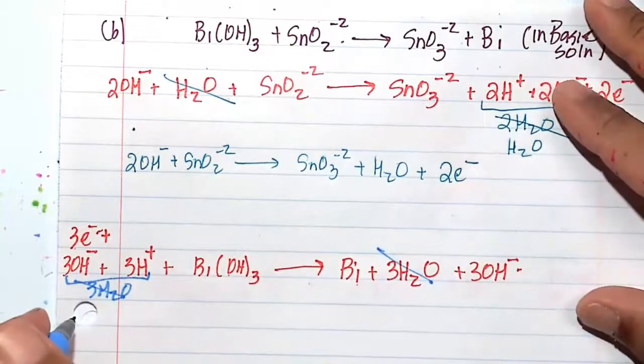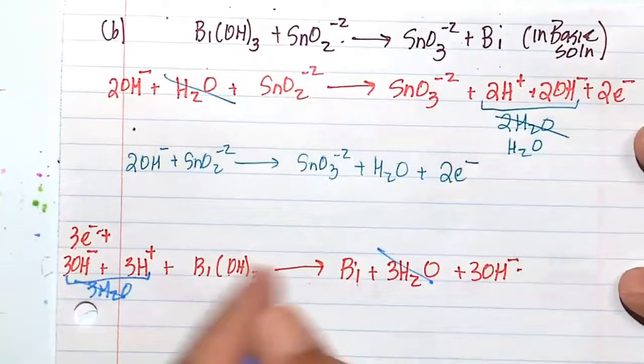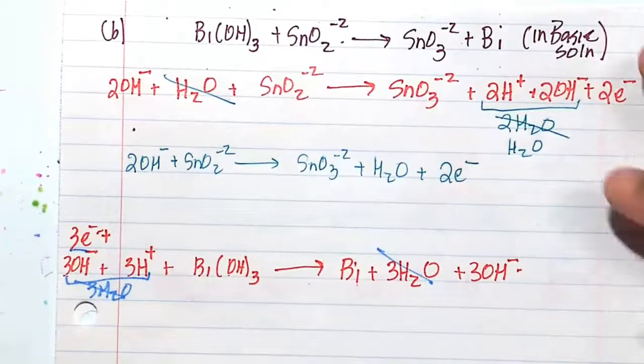And let's go ahead and write this half reaction. I'm going to write it above here. By the way, this is a reduction half reaction. We gained three electrons.